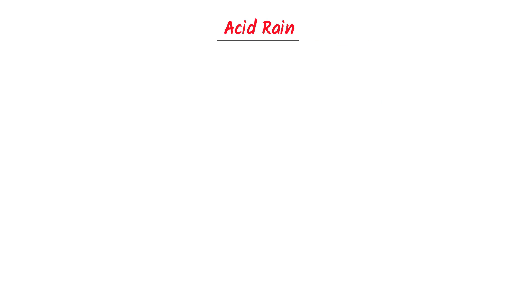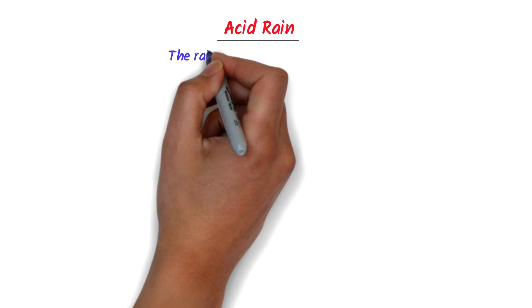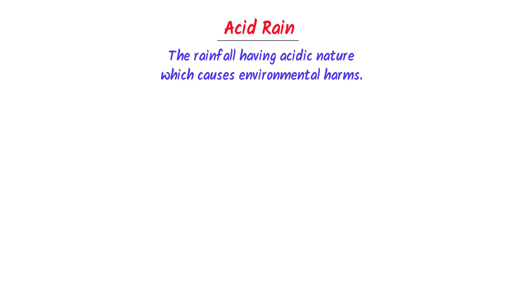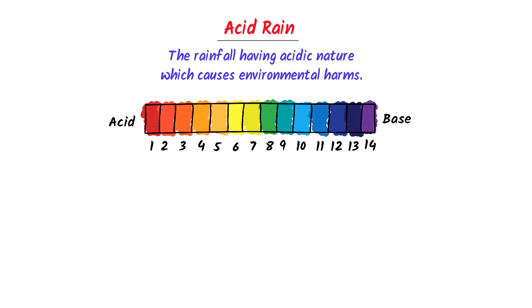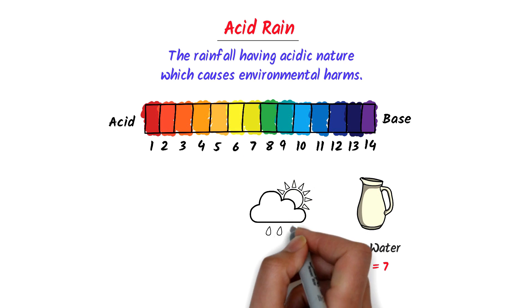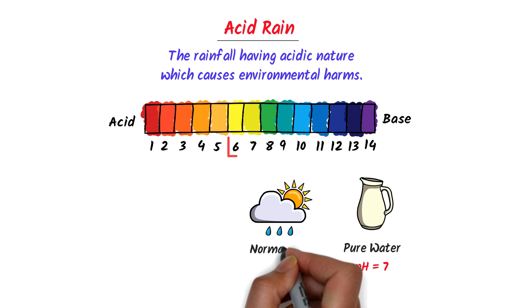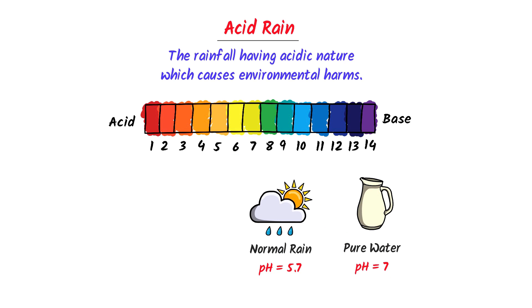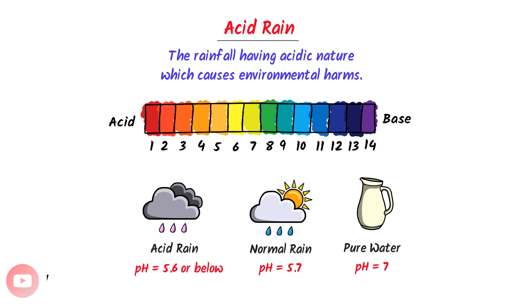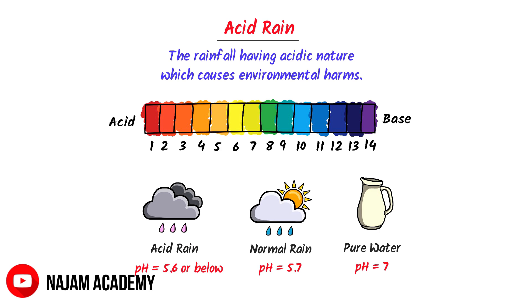What is acid rain? In simple words, acid rain is the rainfall having acidic nature which causes environmental harm. We know that the pH of pure water is 7 and the pH of normal rain is 5.7. If the pH of rain is 5.6 or below 5.6, it is known as acid rain.